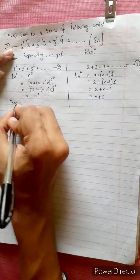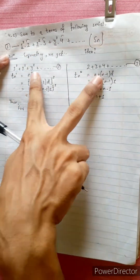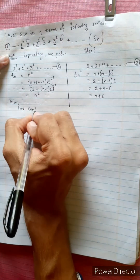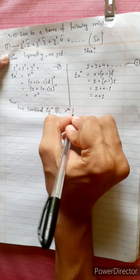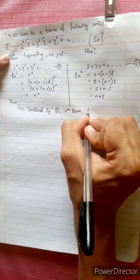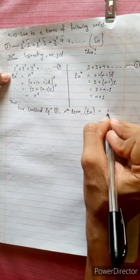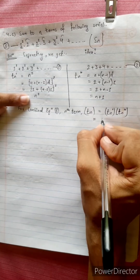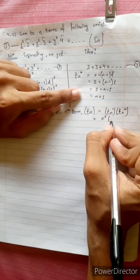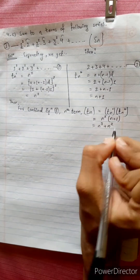Then for the combined equation, combining equation 1, the nth term is found. t_n multiplied — t_n dash, t_n double dash — equals t_n dash times t_n double dash, giving n plus 1 times n squared.